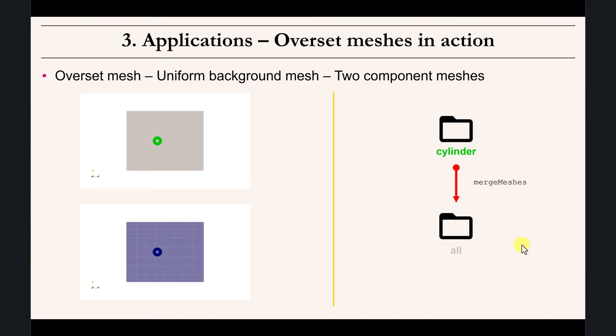In the previous case we worked with a background mesh and the mesh around the cylinder. We were working in ANSYS Fluent and also in OpenFOAM, and the approach is pretty much the same. You generate the meshes independently and then merge everything. In OpenFOAM you use a specific command, and with Fluent you just append meshes. Later we're going to see some standard practices when it comes to generating and matching these meshes.